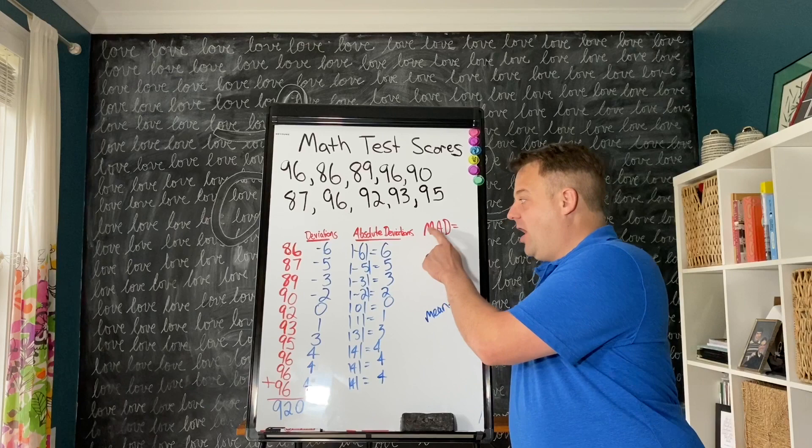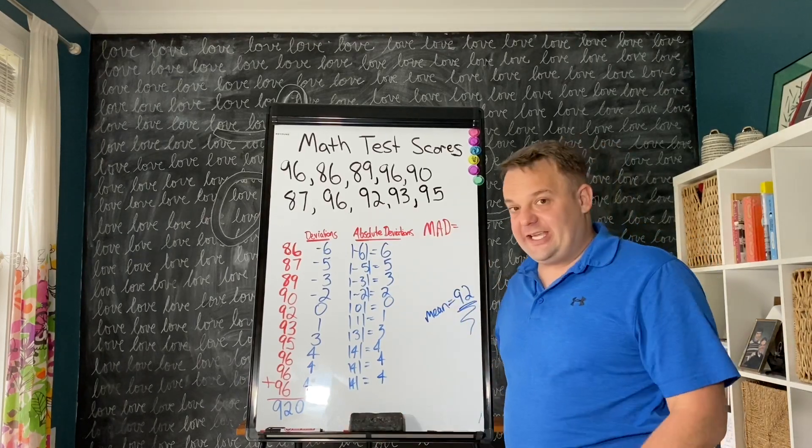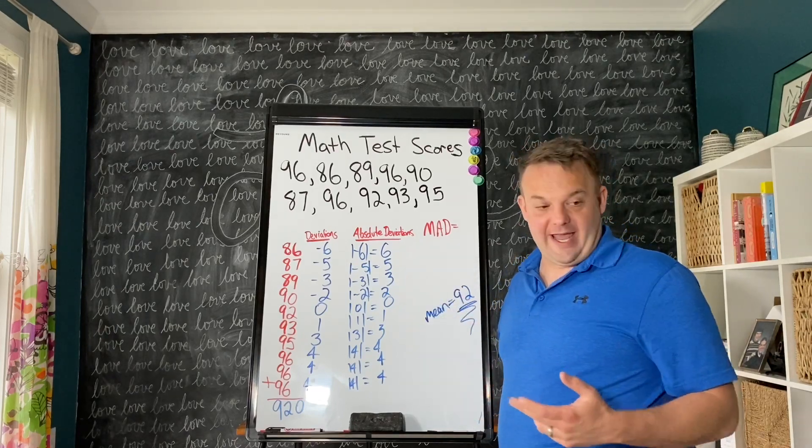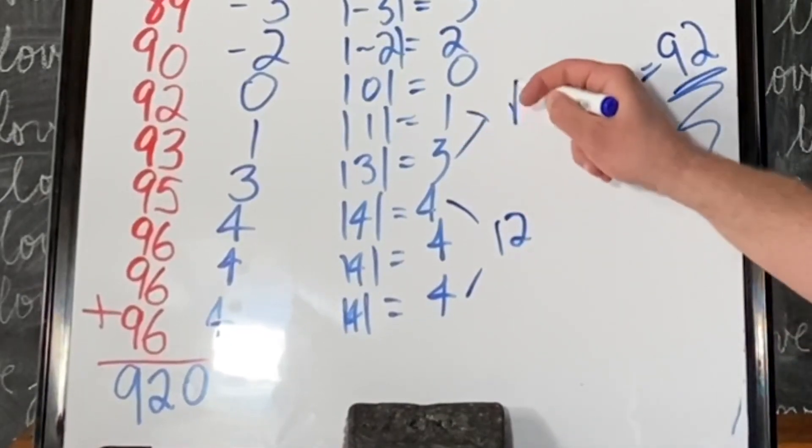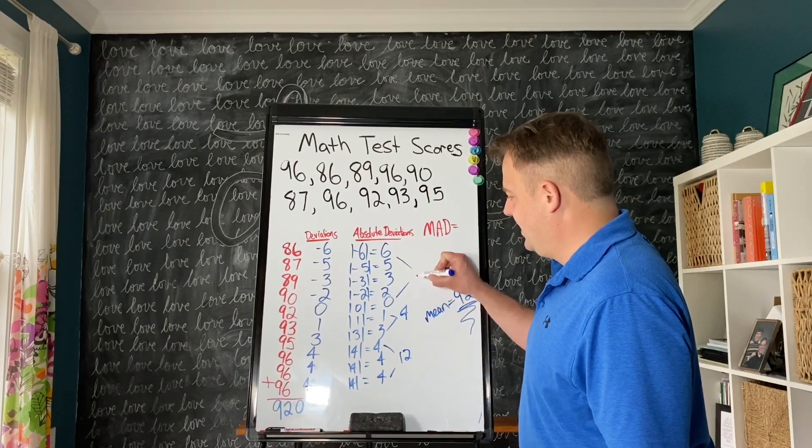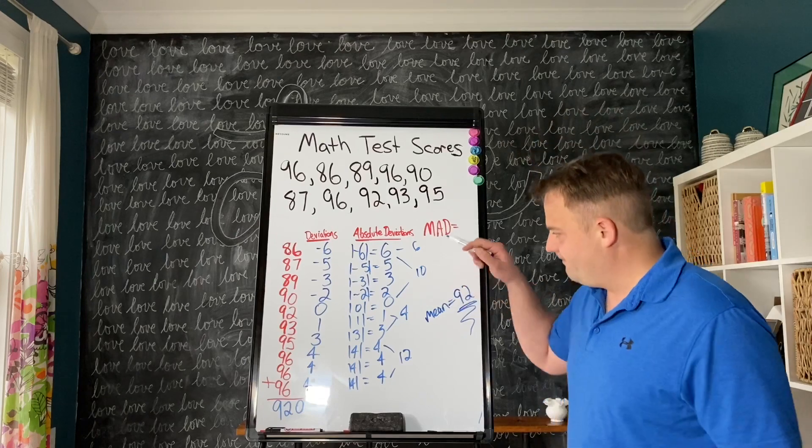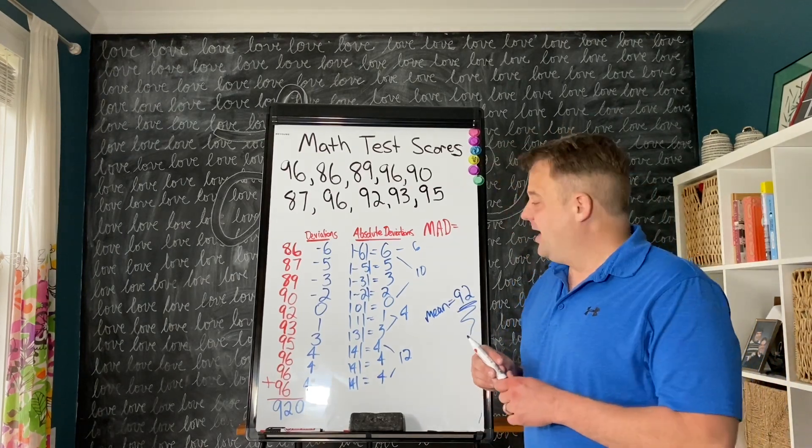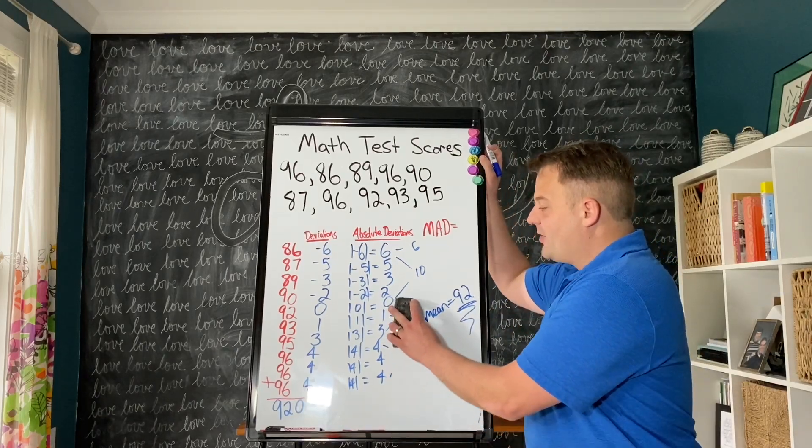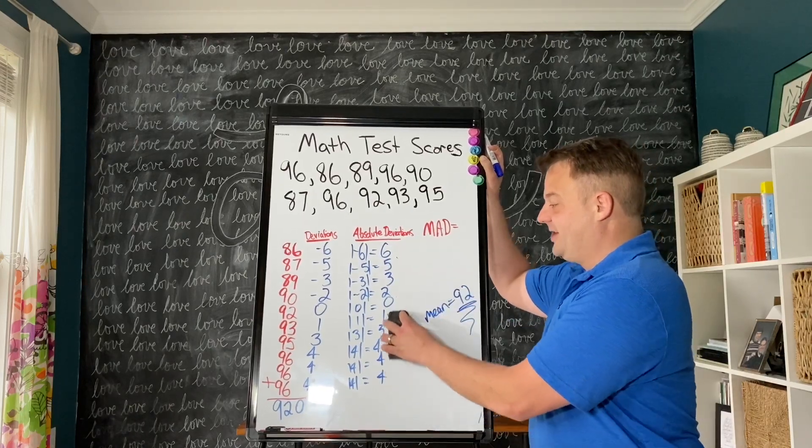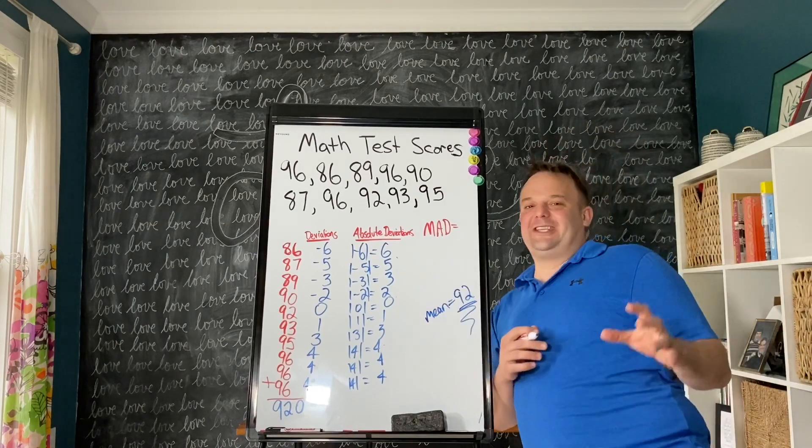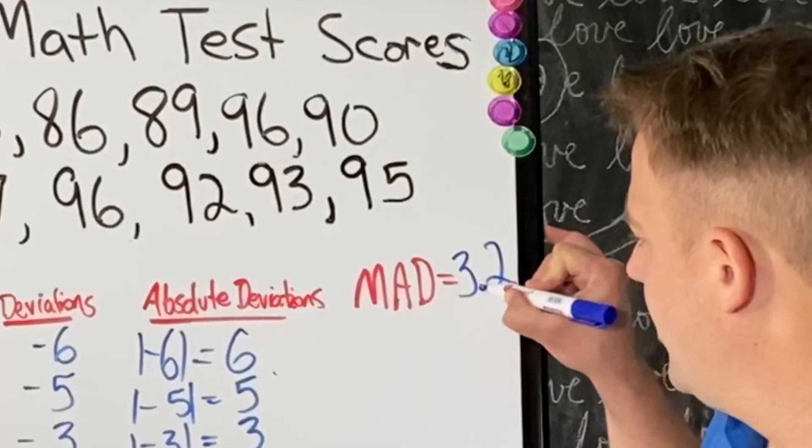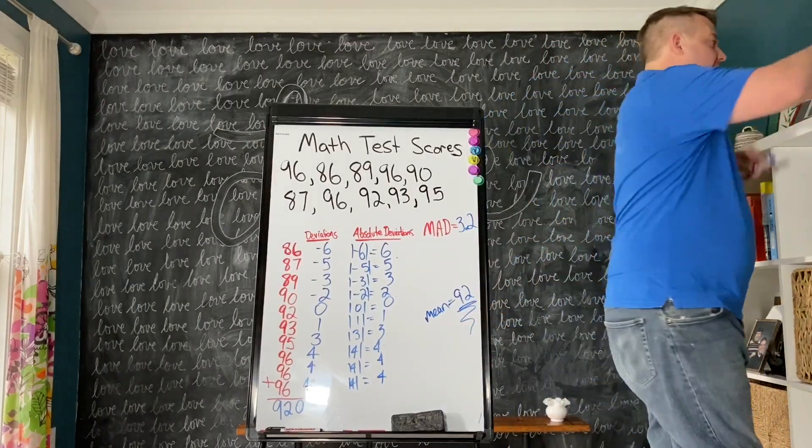In order to find the mean of the absolute deviations, you add up all the absolute deviations and divide by however many there are. There are 10. This is 12, this is 4. 2 plus 3 plus 5 is 10 plus 0, and this is 6. 6 plus 10 is 16 plus 4 is 20, plus 12 is 32. Now we take 32 divided by 10, which gives the mean absolute deviation of this data set away from 92. The mean is 3.2.